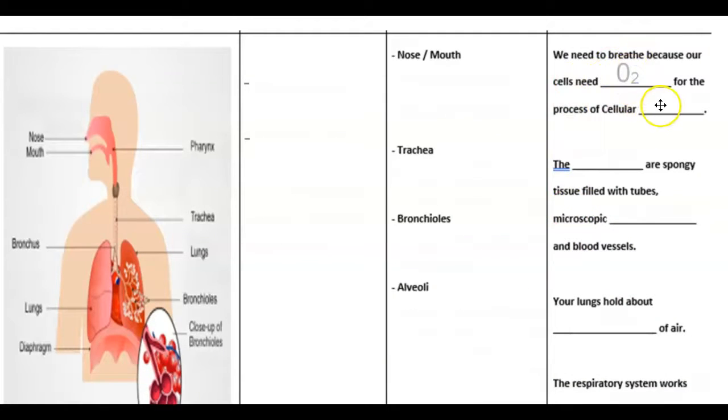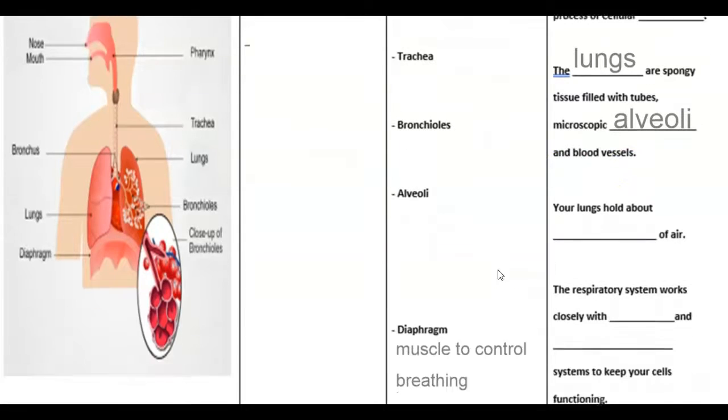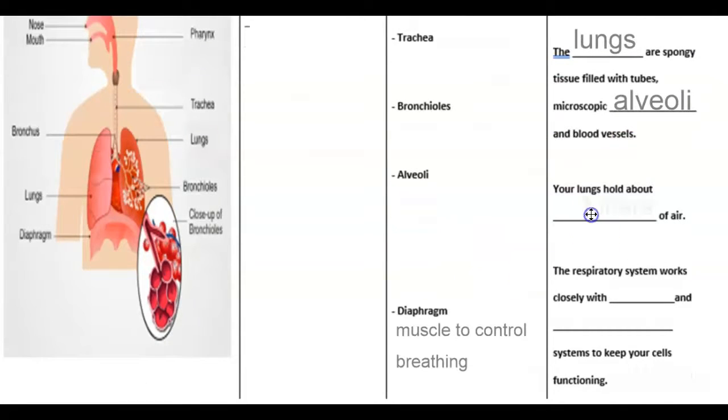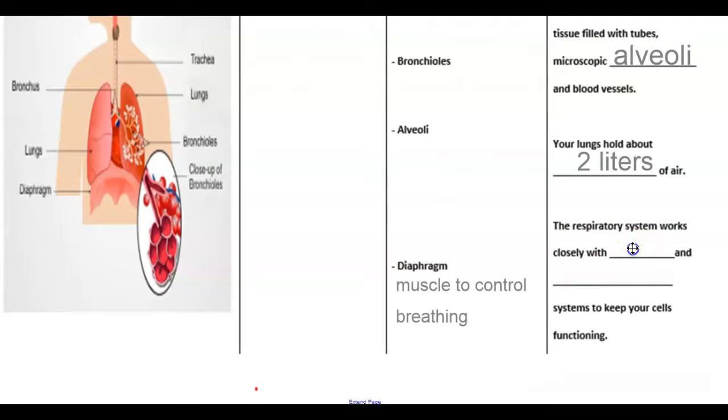Let's talk about some of the fun facts. We need to breathe because our cells need oxygen because cellular respiration is happening in every cell of your body. The lungs are basically spongy organs filled with tubes, microscopic alveoli, and blood vessels. Your lungs can hold a lot of air. It turns out each lung can hold about one liter of air on average. Athletes or musicians might be able to increase that just through practice. The respiratory system works closely with other body systems like your digestive system and cardiovascular to help provide that energy that our bodies need.